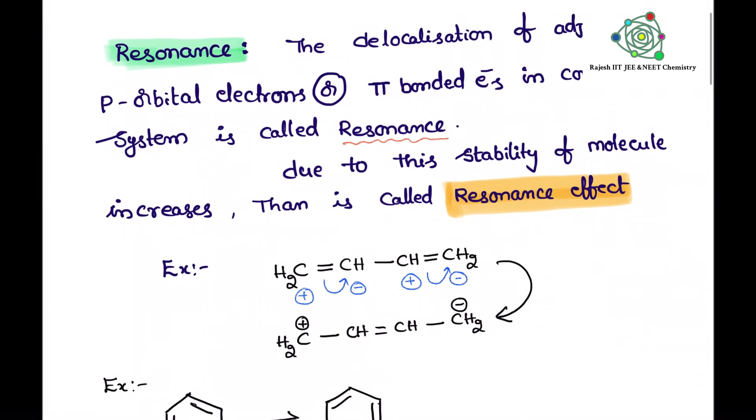So now you take here, in this example, conjugated system means simply we can say alternative double bonds. You see double bond, single bond, double bond. In the double bond, one is sigma bond, another one is pi bond. This pi bond is moving from left to right and we are getting this compound. I think you may get one doubt - these pi bonds may move from right to left also. So due to this movement, this molecule is getting stability.